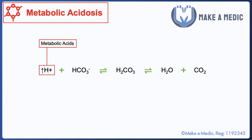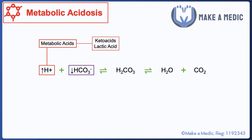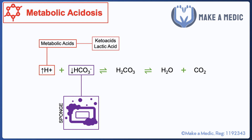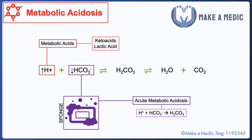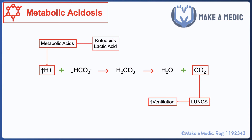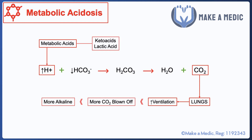Metabolic acidosis, on the other hand, is caused by an excess of various other metabolic acids such as ketones and lactic acid. When excess acids enter the system, the immediate reaction is for the protons to combine with bicarbonate and form carbonic acid — bicarbonate acts as a sponge, soaking up protons to prevent them from affecting the pH. During an acute metabolic acidosis, the serum bicarbonate concentration goes down, and the lungs try to adjust by increasing ventilation to blow off more CO2 and push the pH back towards normal.